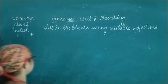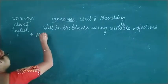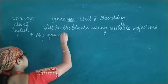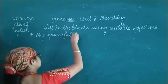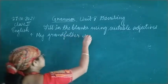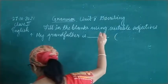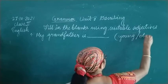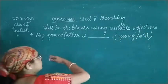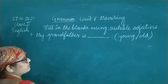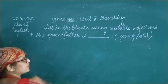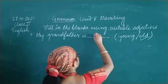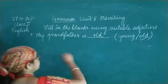First one is: My grandfather is blank. The option is young or old. Grandfather — dada ji or nana ji — can be old. So you have to write here 'old'. My grandfather is old.